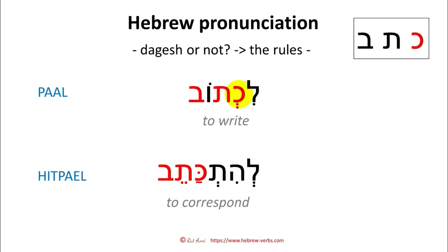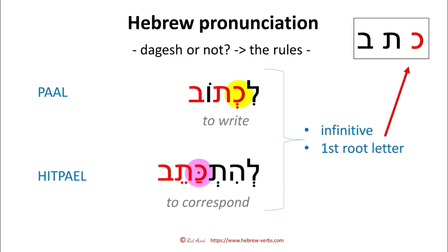Same root, but once we put no dagesh and once we do put a dagesh — why is that? Let's have a look. We are looking here at infinitives and considering a root where the dagesh goes into the first root letter or not. This is the only option we have here. The first root letter is the one that gives us the challenge, and in this case Paal infinitives simply do not put a dagesh on the first root letter.